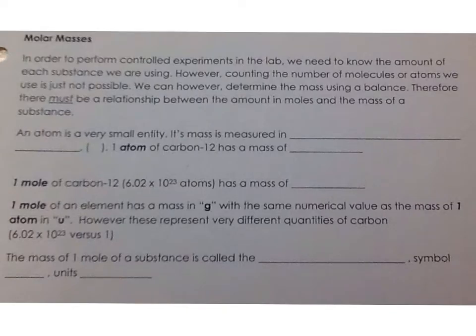In order to perform controlled experiments in the lab, we need to know the amount, so the number of moles, of each substance we are using. However, counting the number of molecules or atoms we use is just not possible. We can determine the mass using a balance. Therefore, there must be a relationship between the amount in moles and the mass of a substance.